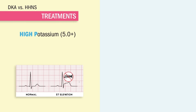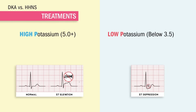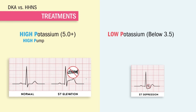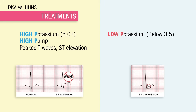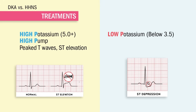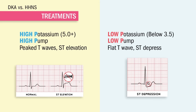To remember the ECG rhythms with high versus low potassium: high potassium means high pumps — we get peaked T waves and ST elevations for potassium over 5.0. The exact opposite for low potassium below 3.5 — low pumps — so we get flat T waves, ST depression, and even a U-wave.